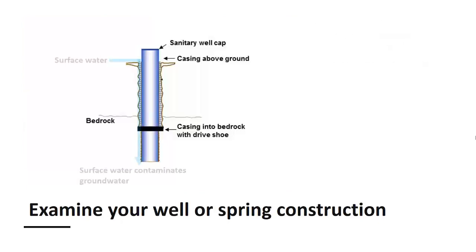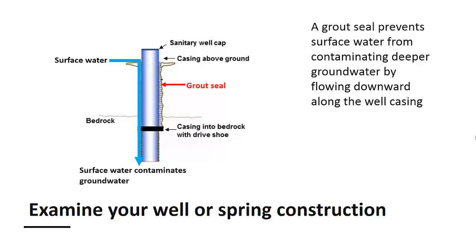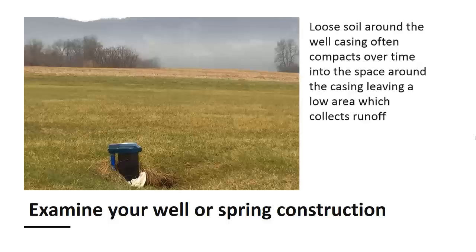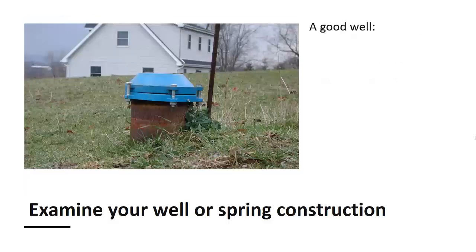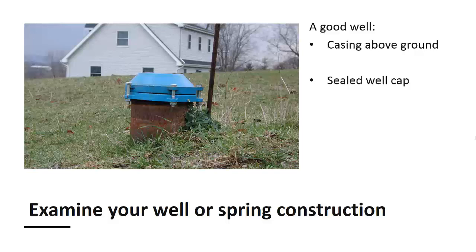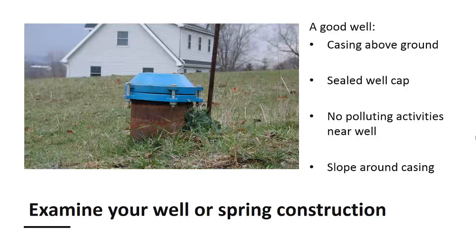Also, check around your well casing to make sure that surface water is not collecting around the casing. Most water wells in Pennsylvania lack a grout seal, which is a cement-like material placed around the casing during the drilling process to prevent surface water from contaminating deeper groundwater by flowing downward along the casing. Loose soil placed around the casing after drilling often compacts over time, leaving a low area which collects runoff. If you notice a low area around the casing, use soil to grade it so that surface water flows away from the casing rather than toward it. Here's a well that has good construction to reduce the chances of bacterial contamination: it has a casing above the ground, a sealed well cap, no polluting activities near the well, and a good ground slope around the casing.